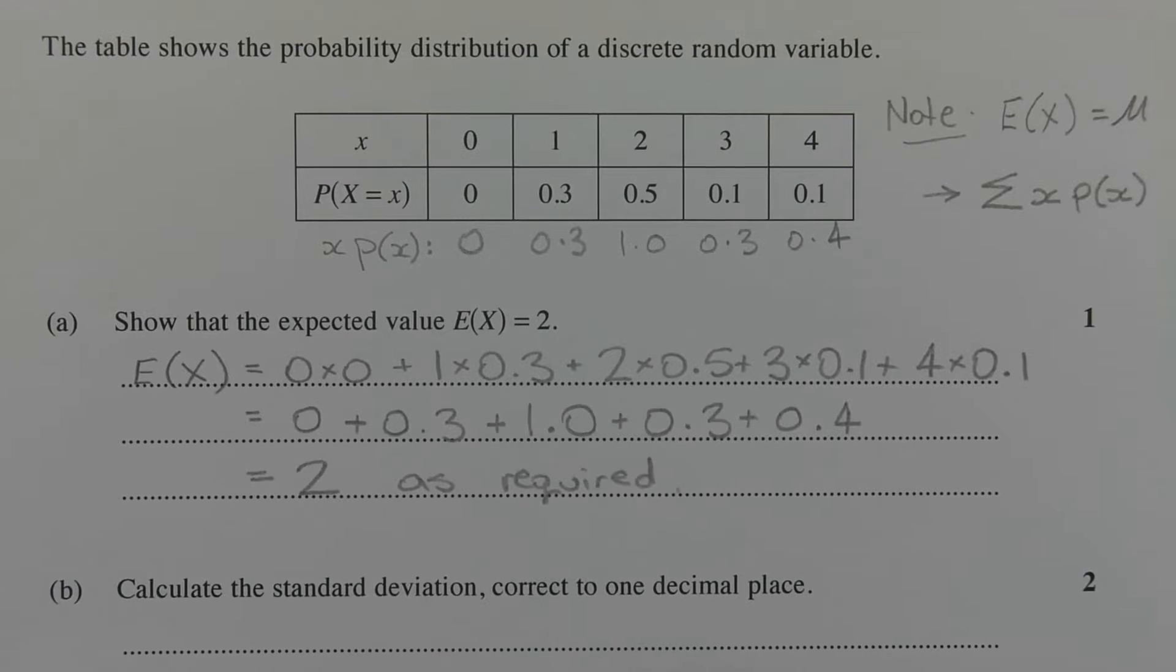E of x represents the mean or average of the random variable x, and it's also represented by the Greek letter mu. It's found by multiplying each score by its associated probability and then adding all those products together. I've written it here in sigma notation, so in other words it's sigma x times p of x, where sigma means the sum of.